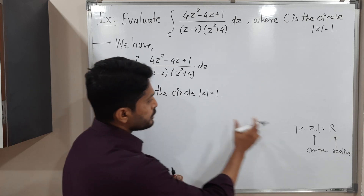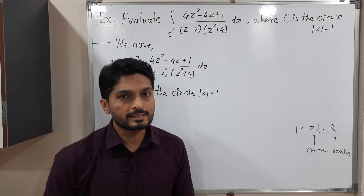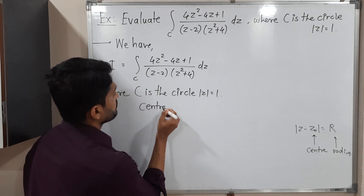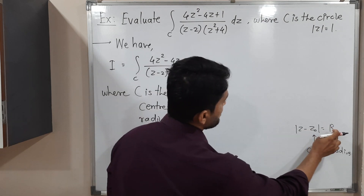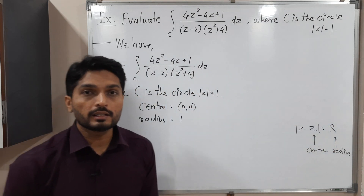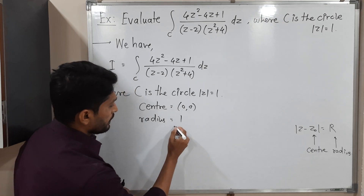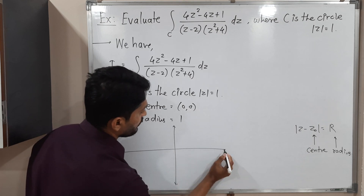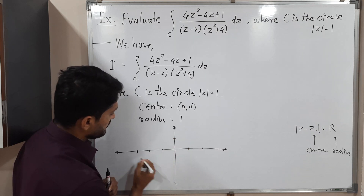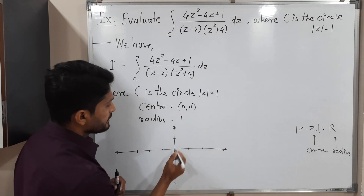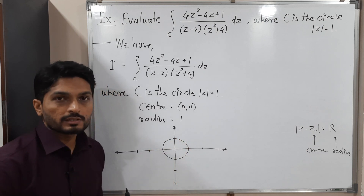Here we have simply |z|, but we should have |z - Z₀|. Since Z₀ is not there, that means Z₀ = 0. So the center of the circle is (0, 0). For the radius, comparing the right-hand side, R = 1. So the given circle has center (0, 0) and radius 1.